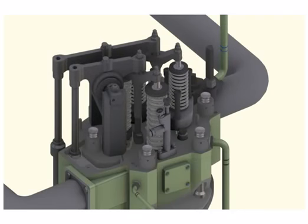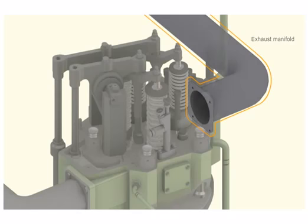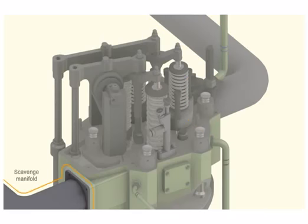The cylinder head assembly is connected to exhaust manifold, scavenge manifold, cooling water system, starting air system, and fuel oil high pressure pipe.